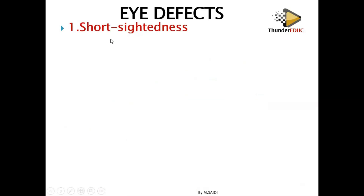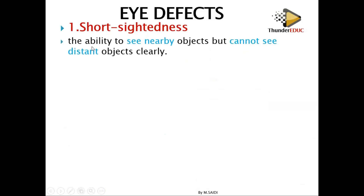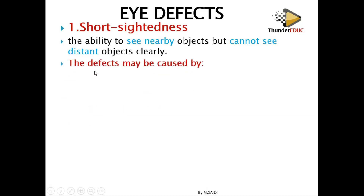At a short distance — that's why it's called short-sightedness. It means that you can't see objects which are far. So it is the ability of the eye to see nearby objects but cannot see objects at a distance — objects which are more than six metres from the individual.